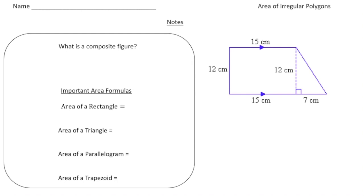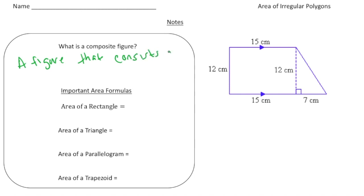You're going to hear me refer to something called a composite figure. So just what exactly is a composite figure? A composite figure is a figure that consists of more than one shape.